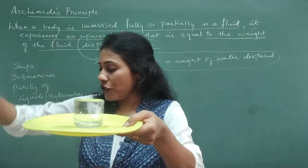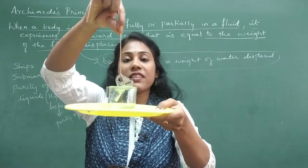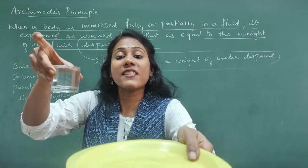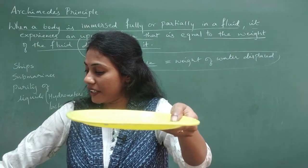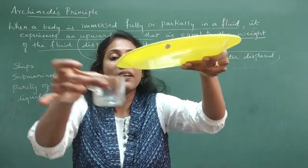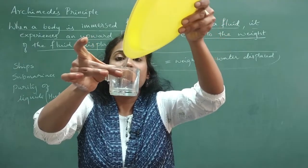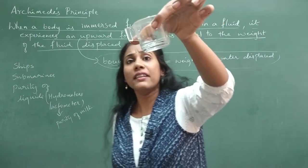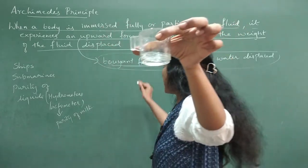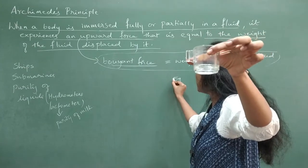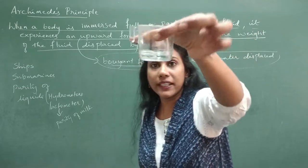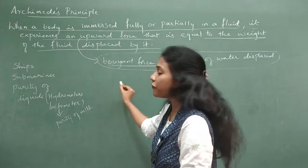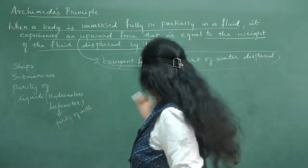When I immerse this object, it experiences a buoyant force. That buoyant force is equal to the weight of the water that got spilled into the plate. I empty the cup and collect the spilled water. Suppose when I weigh that water I get around 5 grams — the weight of that displaced water is always equal to the buoyant force.